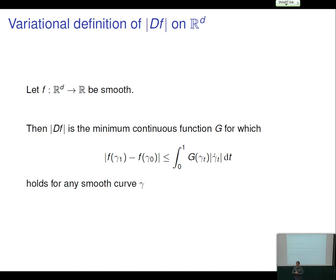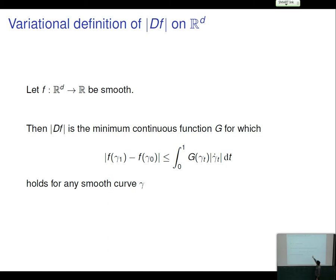The key observation is that you can define the modulus of the differential of a smooth function on ℝ^d without ever taking a derivative — just by a variational principle. The modulus of the differential of a smooth function f is the minimum continuous function g for which the inequality |f(γ₁) - f(γ₀)| ≤ ∫g(γ_t)|γ'_t| dt holds for every smooth curve. It is trivial that the modulus of the differential works there.